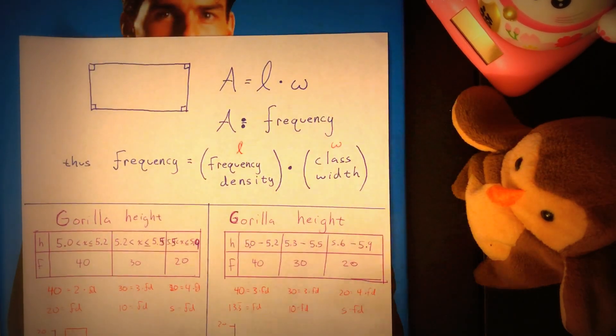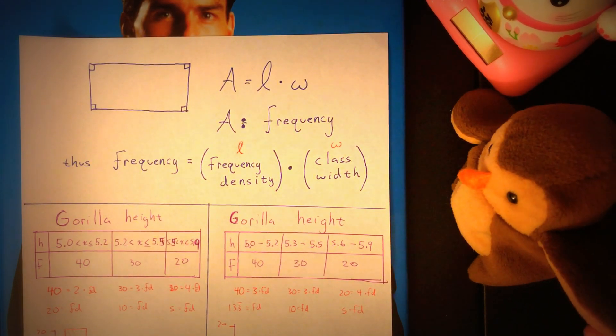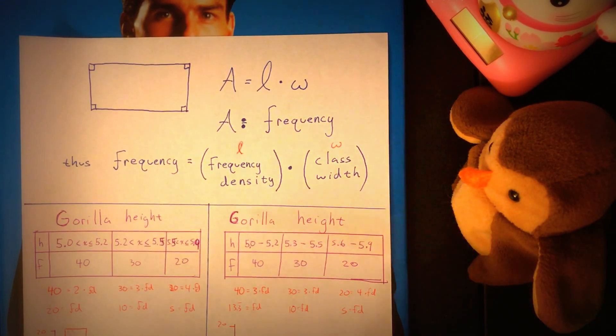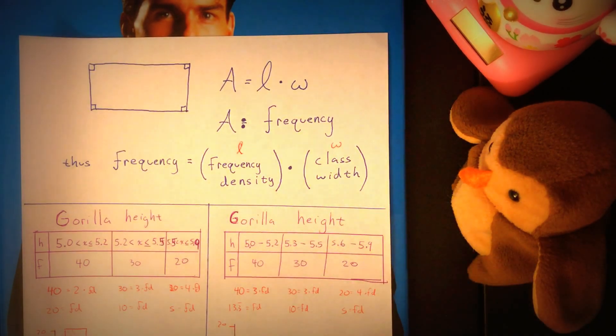Look here at these two different tables. Can you see the difference? Take a look. Oh, you notice the difference? It's in how they list the height. On the left side, inequalities. On the right side, they just say five to five two, five three to five five. They focus on the integer values. It's a little vague. So these different ways they list the heights will show different ways we're going to label the x-axis.